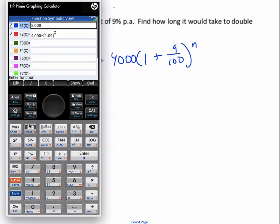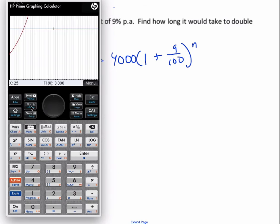And then you can go to plot, and you'll see that the red line is the amount of money that's increasing every year. And this blue line represents 8000. So we want to see when these two intersect, and that's the number of years.